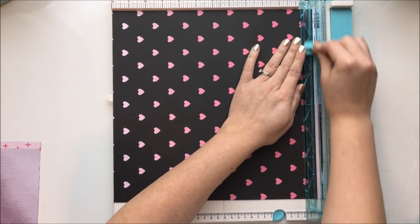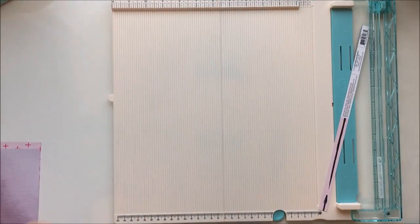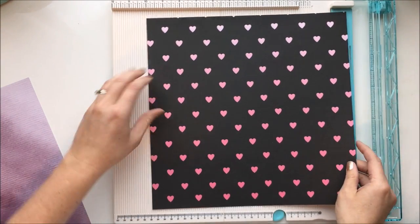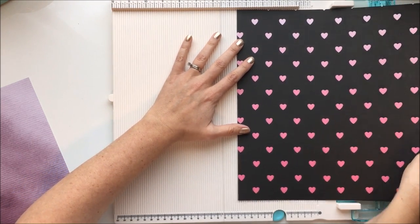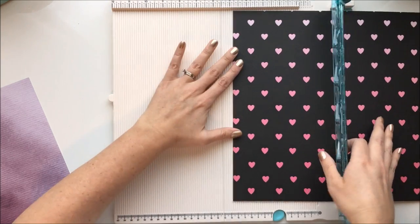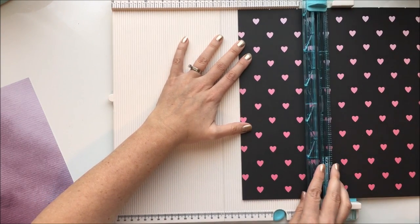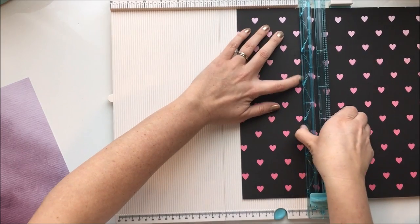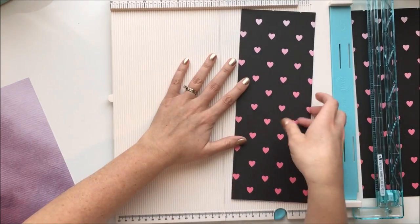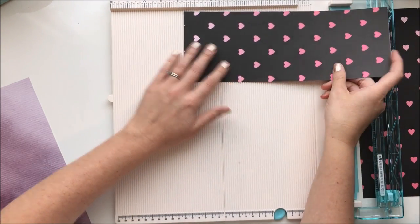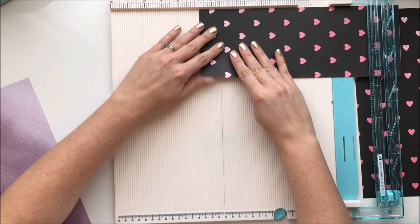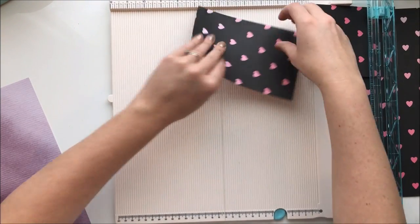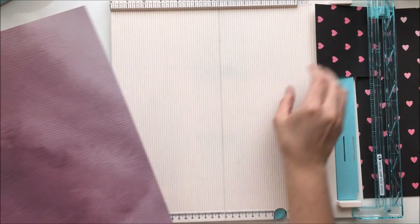So I'm using my We Are Memory Keeper score and trim board to trim some pattern paper down from the Urban Chic collection, also by We Are Memory Keepers. I've been having a lot of fun with this tool. One of the things that I really like about it is that when it is all laid out like this, it's a full solid base and so I can put a whole sheet of 12 by 12 paper in there and it's not bending or folding over the edge. Also, I'd say my favorite part is that when you put the arm down that has the trimming blade in it, it's magnetic and so it really clasps down nice and tight.